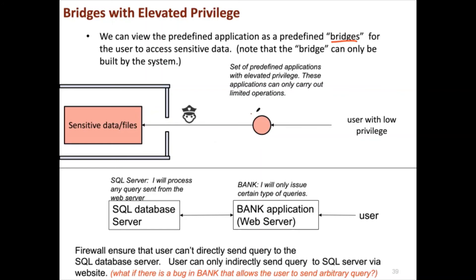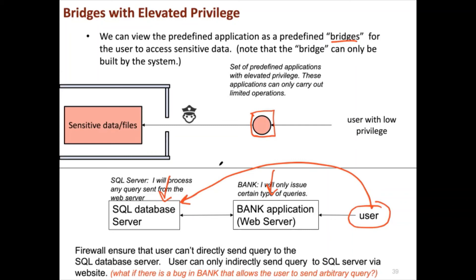This predefined bridge application must be written very carefully so that Alice can only do what she is allowed to do. We have seen a similar concept with the web server and SQL server: users on the internet cannot directly send queries to the SQL database server. Instead, the user accesses a web application, which then sends limited, predefined queries to the SQL server. The web server acts as a bridge, and there are only a limited set of queries that will be generated.